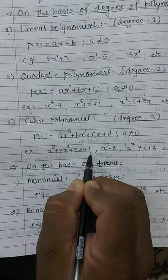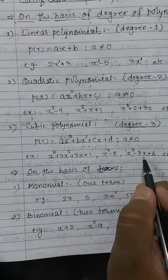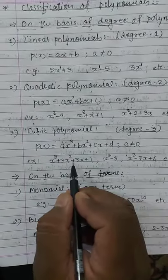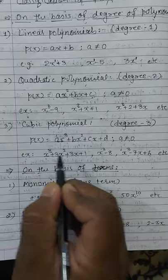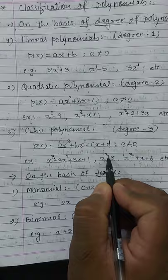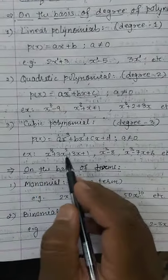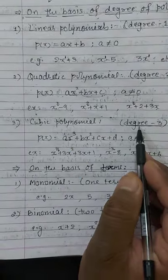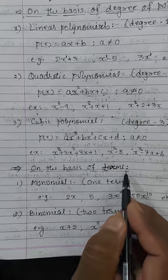Examples of cubic polynomials: x cubed plus 3x squared plus 3x plus 1, x cubed minus 8, x cubed minus 7x plus 6. In all examples, the highest power of the variable term is 3, so these are cubic polynomials.